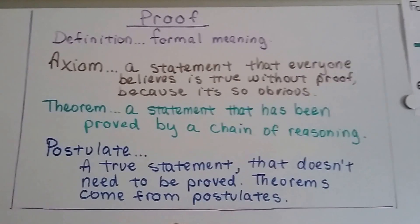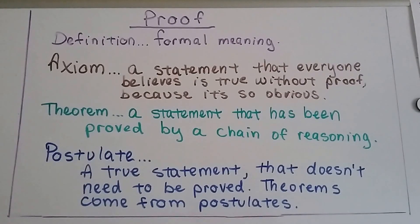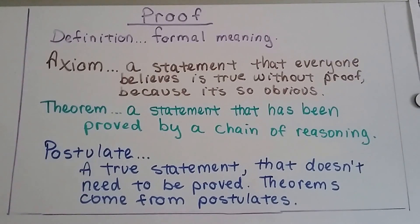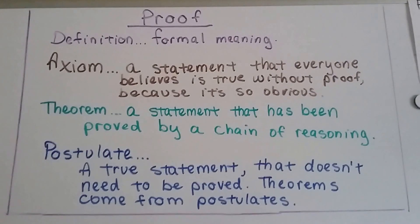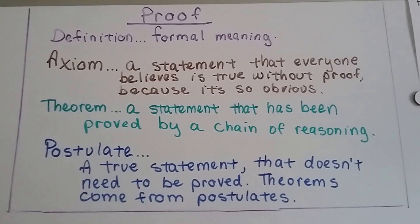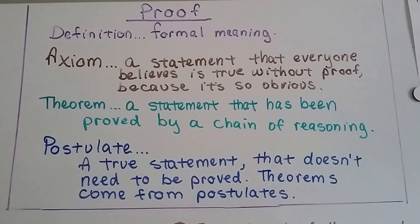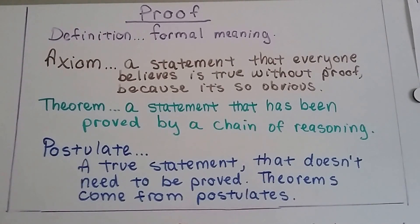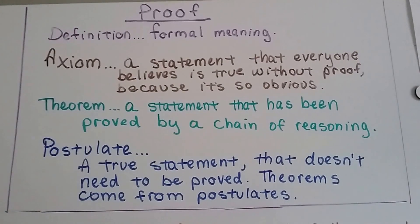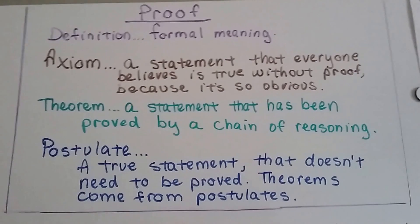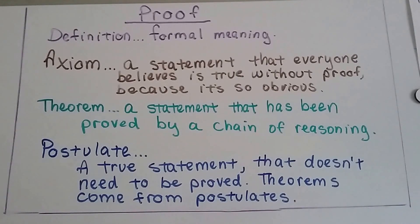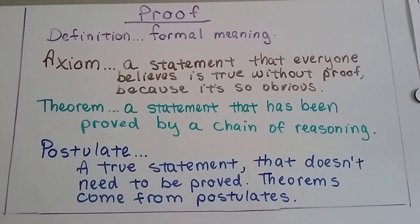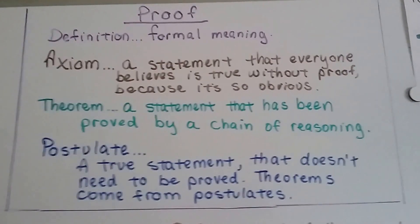There are a few words I want you to add to your notes. When we're doing proofs — which is sort of like what we're doing right now, a geometric proof — we use a few things. We use definitions, that's a formal meaning. We use axioms — a statement that everyone believes is true without proof because it's so obvious. We use theorems, like this triangle sum theorem — a statement that's been proved by a chain of reasoning. And we use postulates — a true statement that doesn't need to be proved. Theorems and even axioms come from postulates.